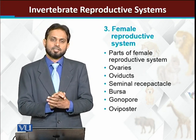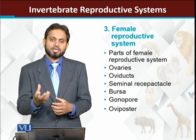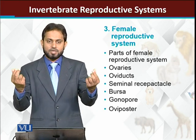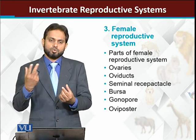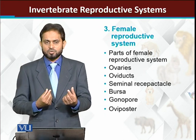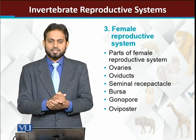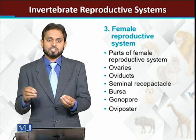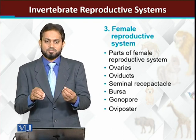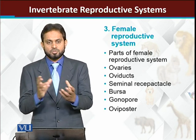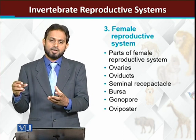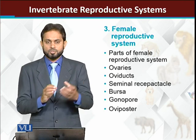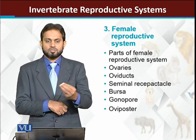Same case with female reproductive organs of invertebrates. The female reproductive structure - females have the ability to produce eggs. Egg production occurs in the ovaries. The prime structure of female reproductive system is the ovaries. After the ovaries, there is the oviduct, then the seminal receptacle where sperm is received and kept for fertilization, then the bursa, where the opposite sex deposits sperm. The opening is called the gonopore, where sperm enters or exits.